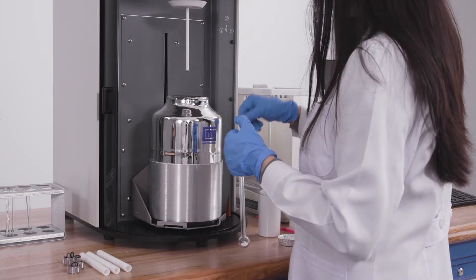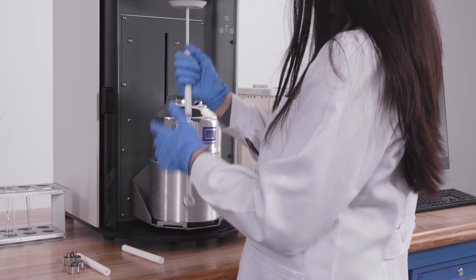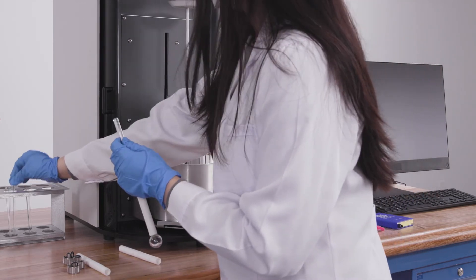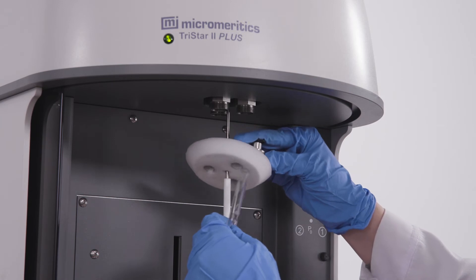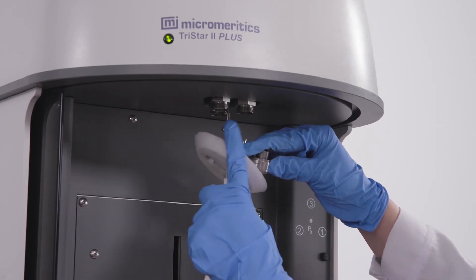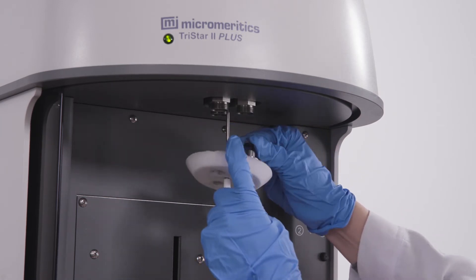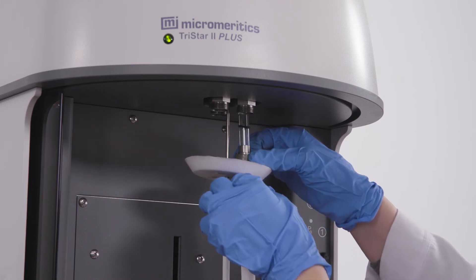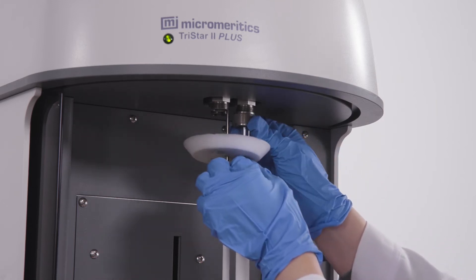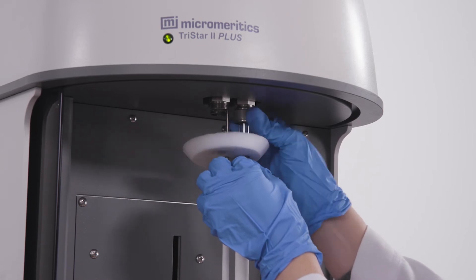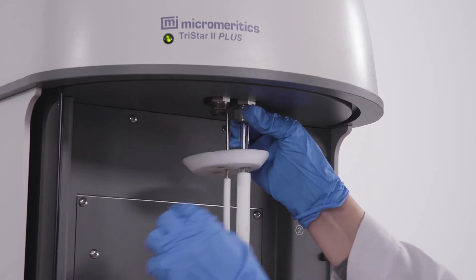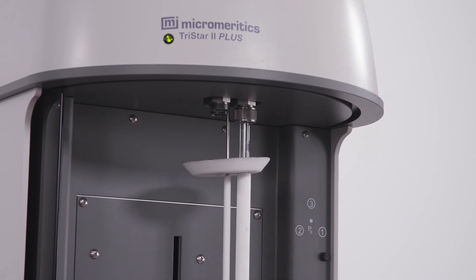Remove the rubber stopper and carefully slide the hanging filler rod into the tube and the isothermal jacket onto the tube. Push the tube through the dewar cover. Then slide the nut, ferrule, and o-ring on the tube. Tighten the nuts until they are finger tight. Close the sliding door.